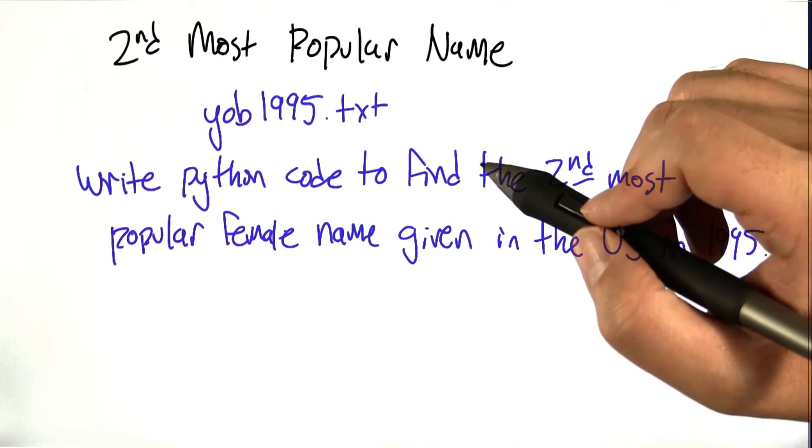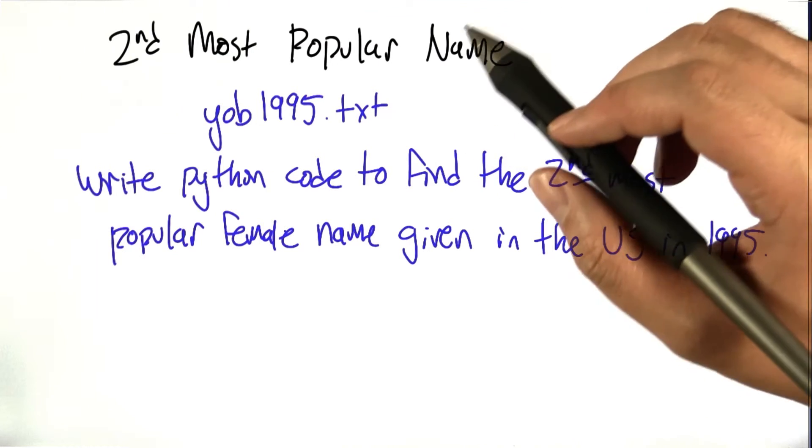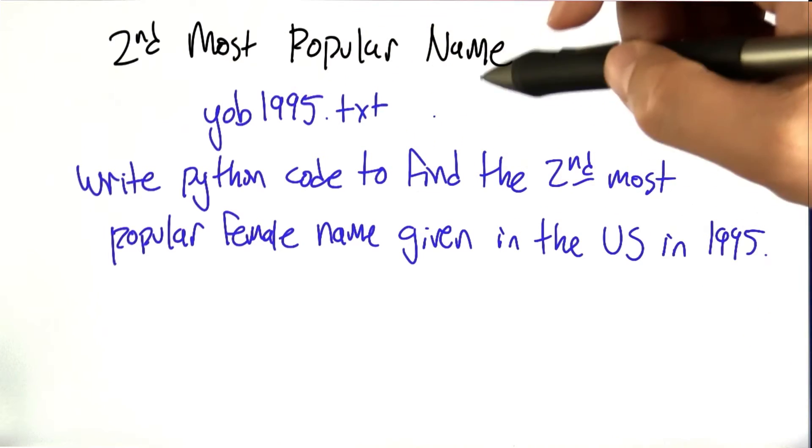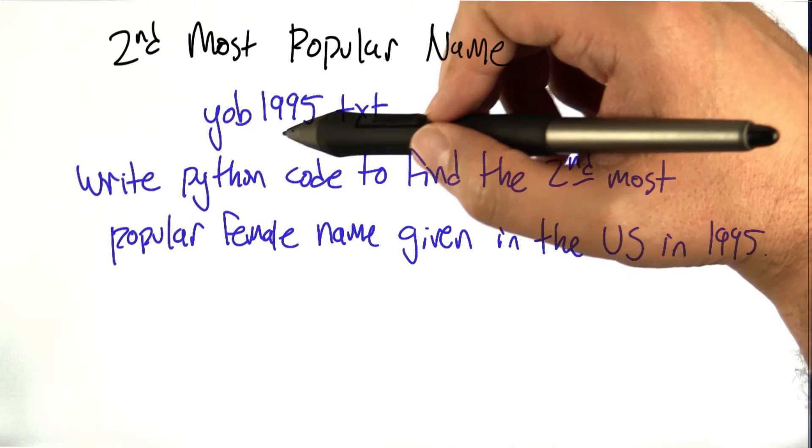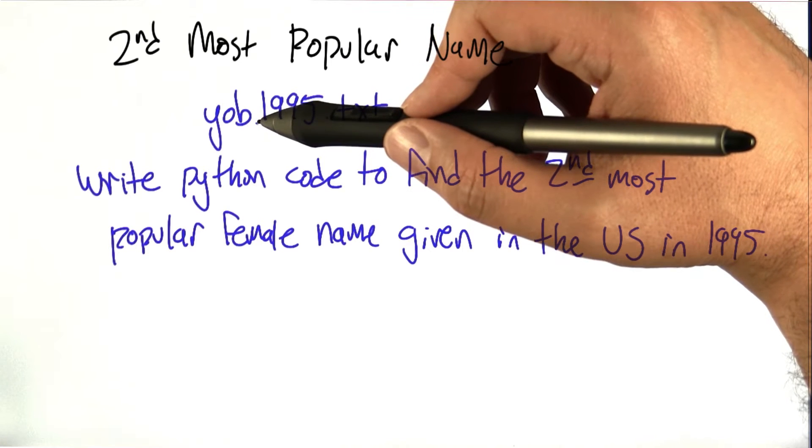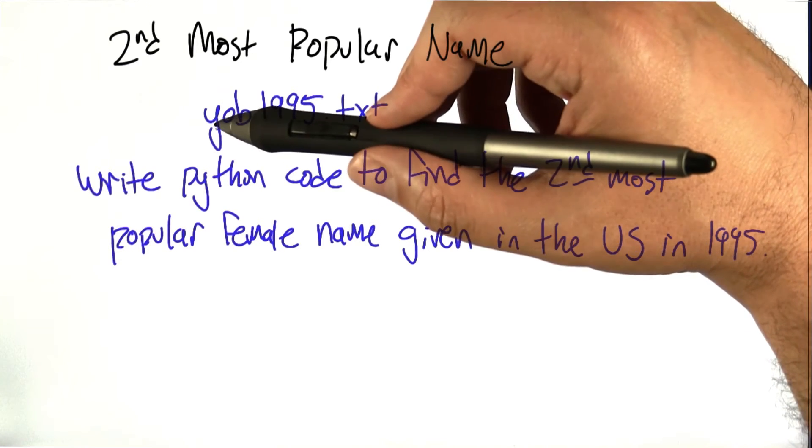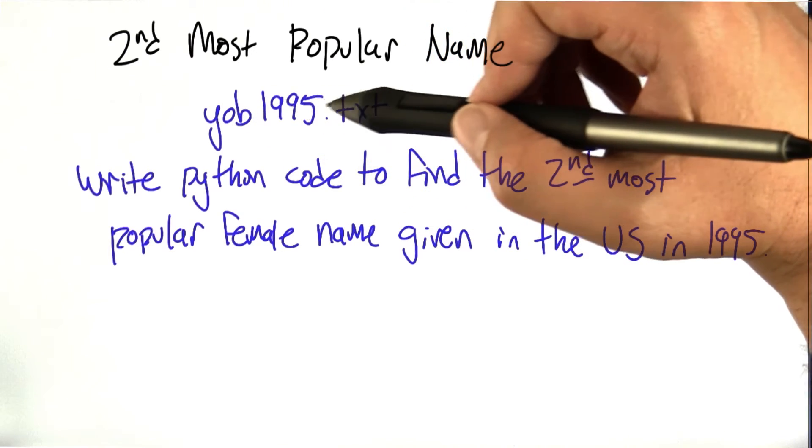To give you a chance to play with this idea of order statistics, I'd like you to write some Python code to find the second most popular name. I'm going to give you the list of the most popular names given to babies in the U.S. in 1995—it's YOB (year of birth) 1995.txt.